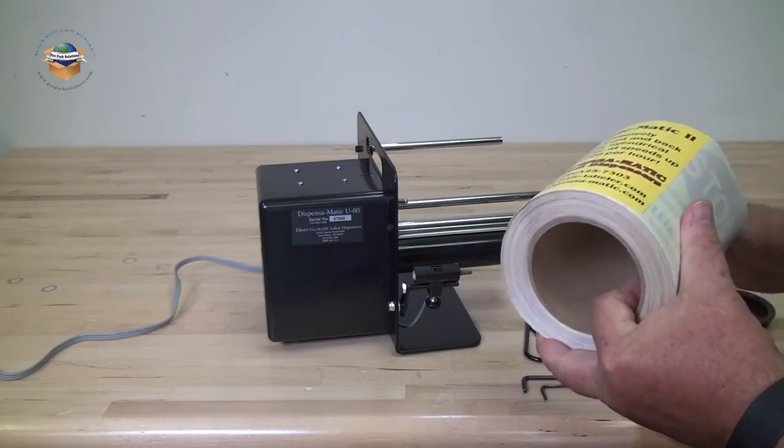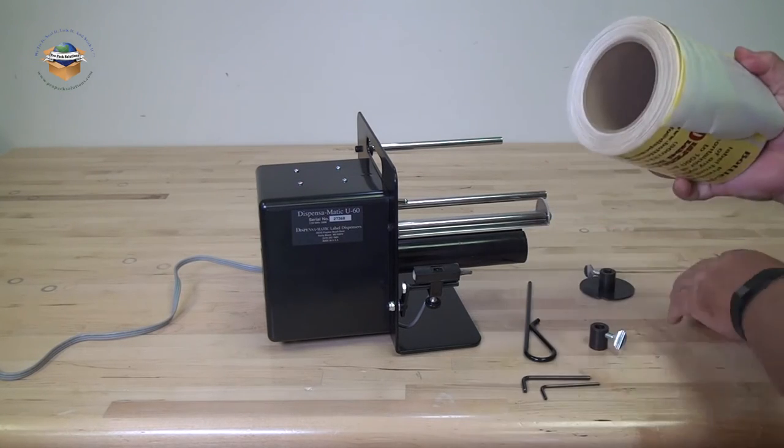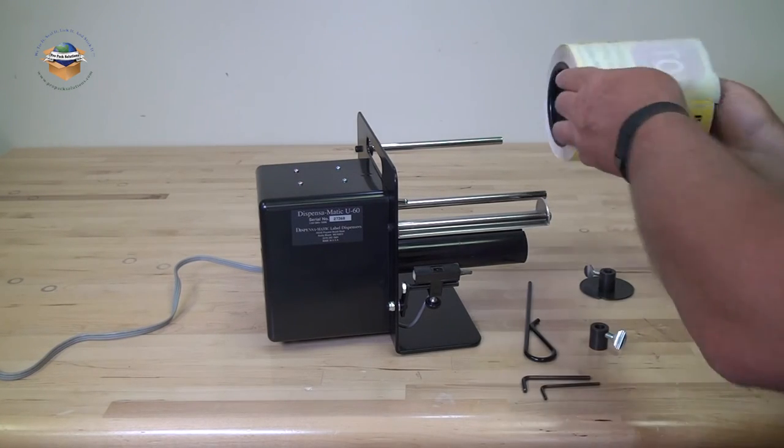To mount the roll of labels, you're going to take your side guides and place one on each side of the roll, and then slide the roll on the shaft.